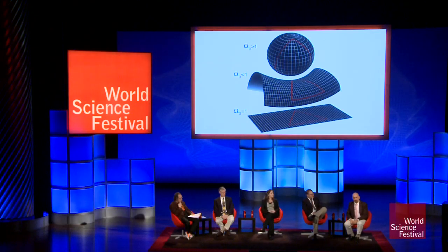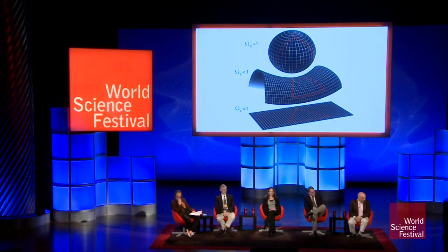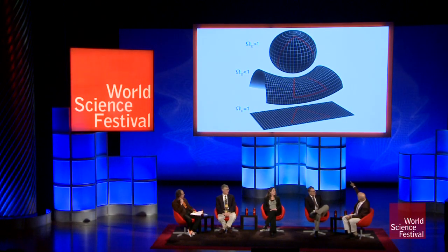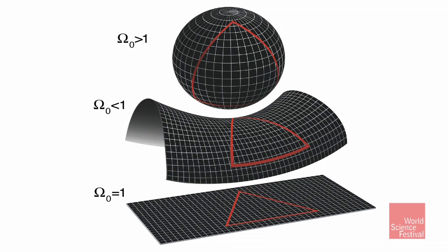...the sum of the angles of that triangle is greater than 180 degrees — the Earth is positively curved. Try the same thing on a flat piece of paper: the sum of the angles of a triangle is 180 degrees. And if you take a piece of paper and curve it into a saddle shape, the sum of the angles is less than 180 degrees.